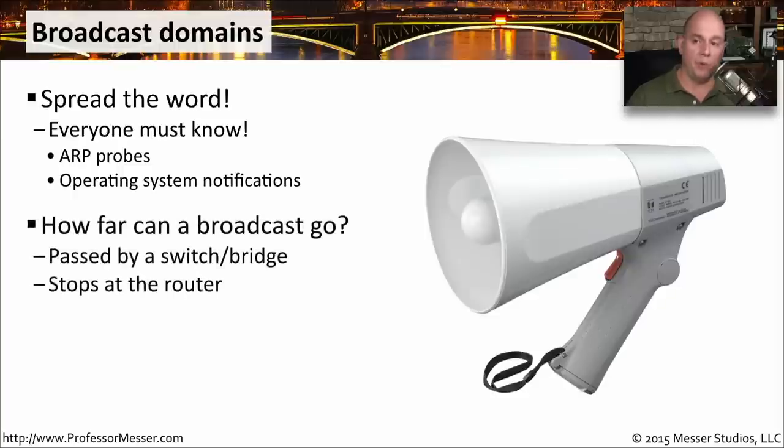Unlike a collision domain, a broadcast domain passes right through a switch. If you send one broadcast into a switch, the switch will send that broadcast to every other interface on that switch. A broadcast domain only stops at a router. That is the device that will not allow a broadcast to pass through it. So if we're going to examine where our broadcast domains might be, you'll notice they stop every time there is a router.